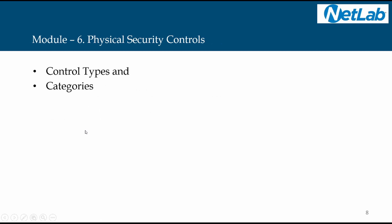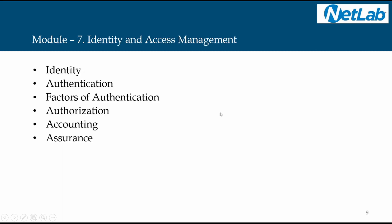In Module 6, physical security controls, we discuss the control types and categories. In Module 7, identity and access management, we discuss identity and authentication, the various factors of authentication, authorization, accounting, and assurance — the 5A concepts. All that we will discuss under this module.